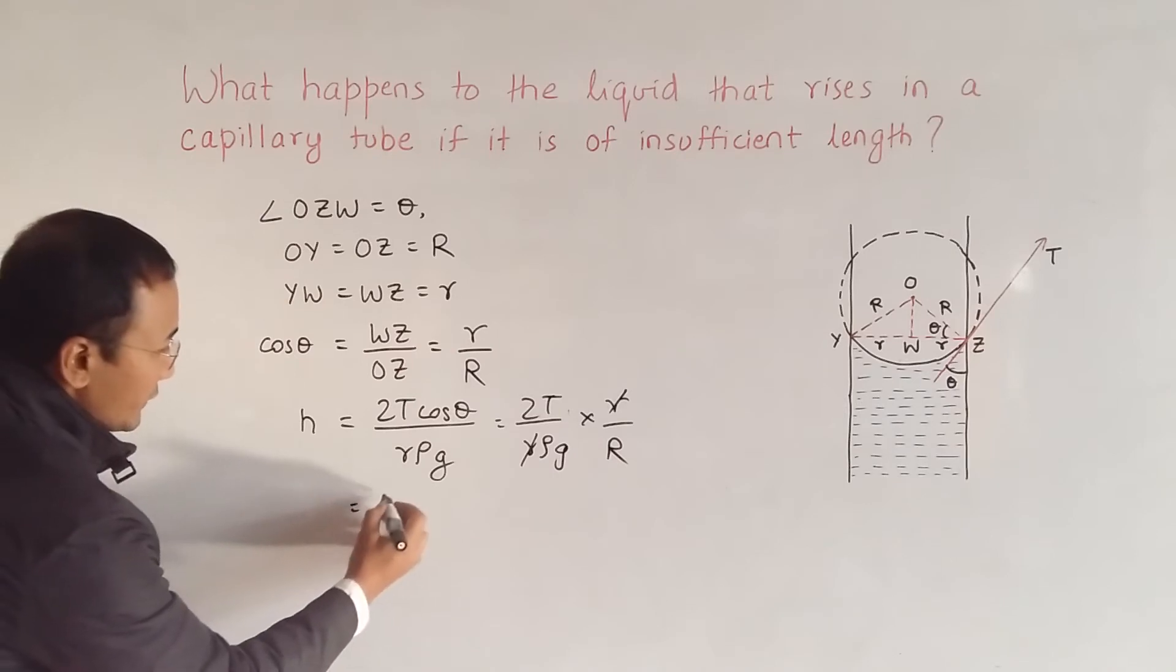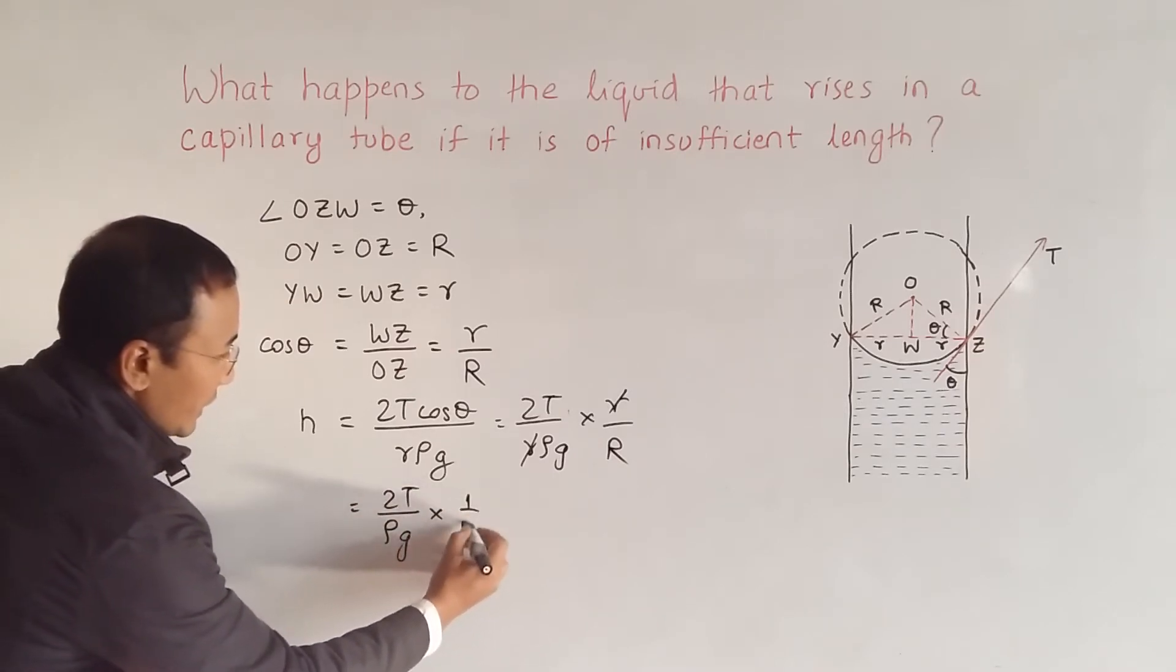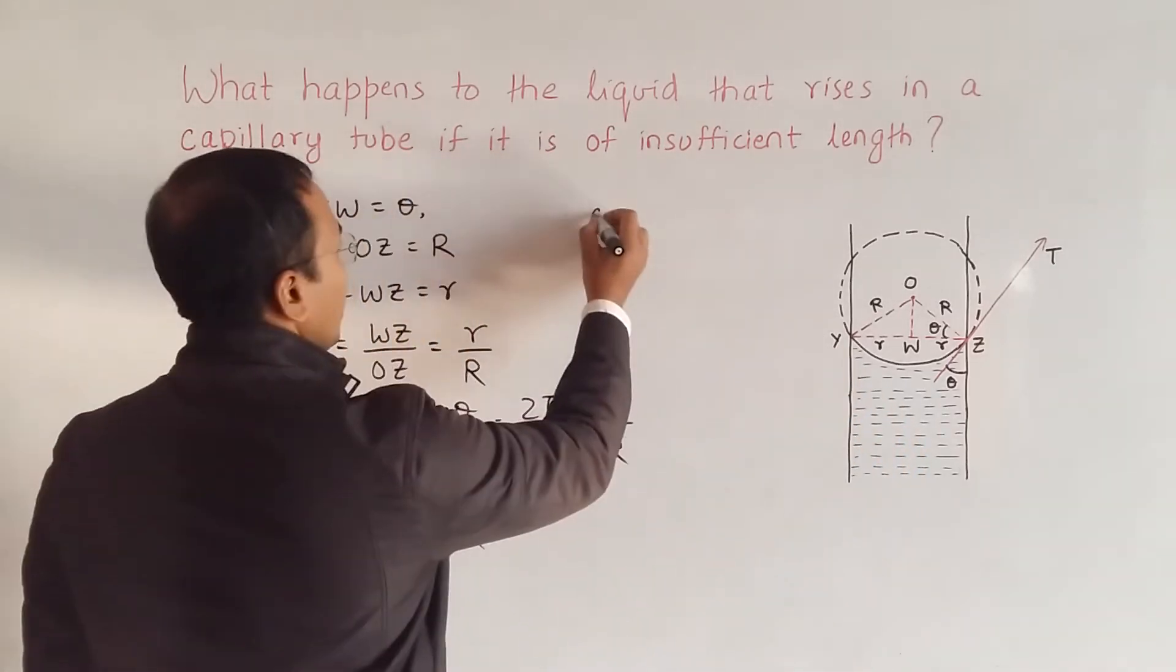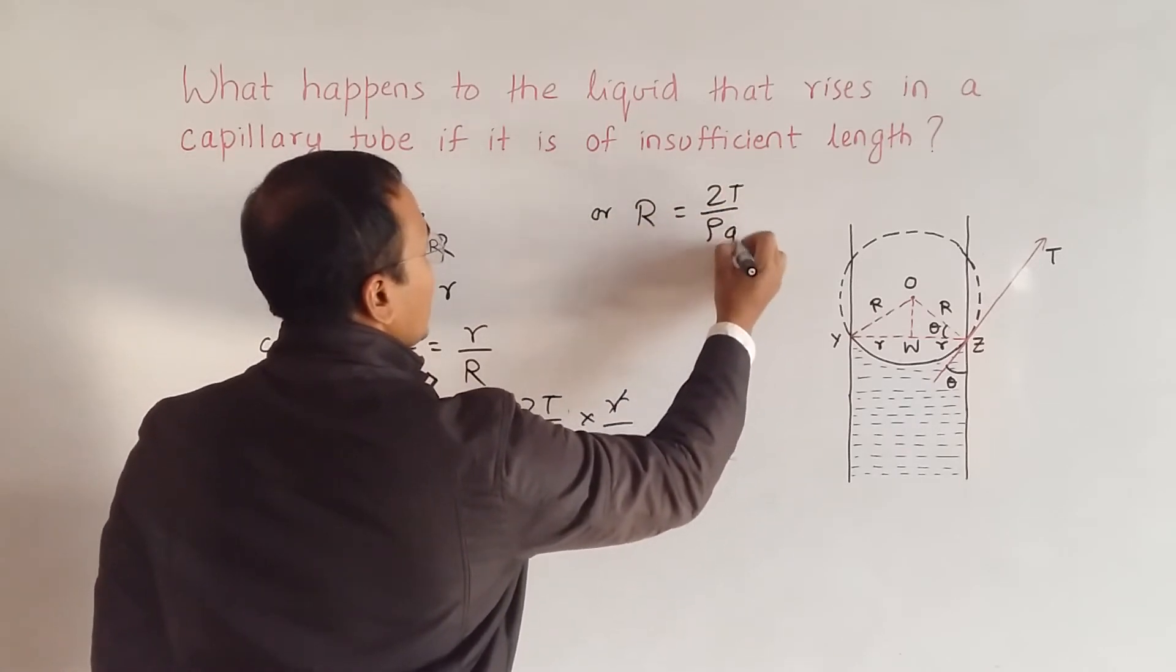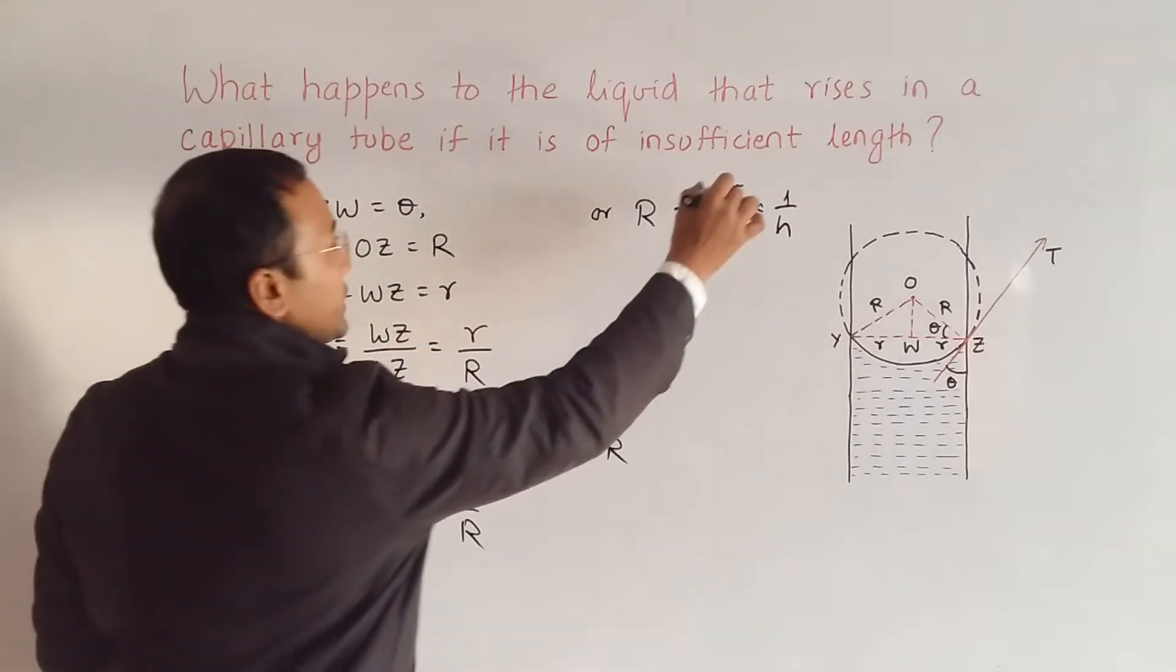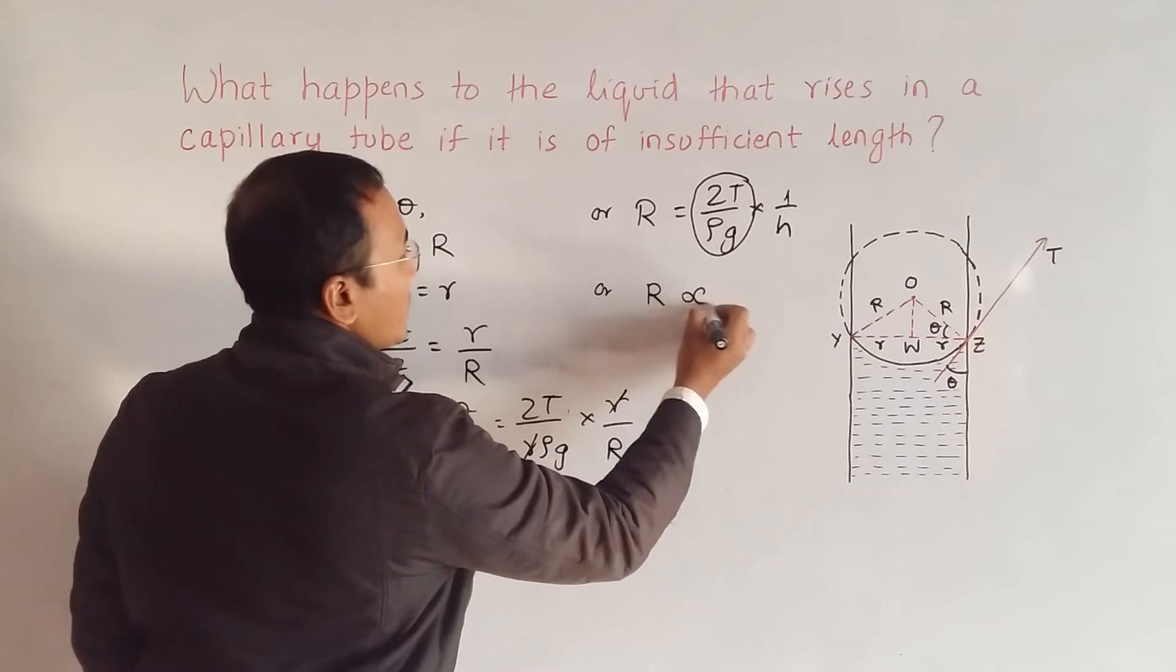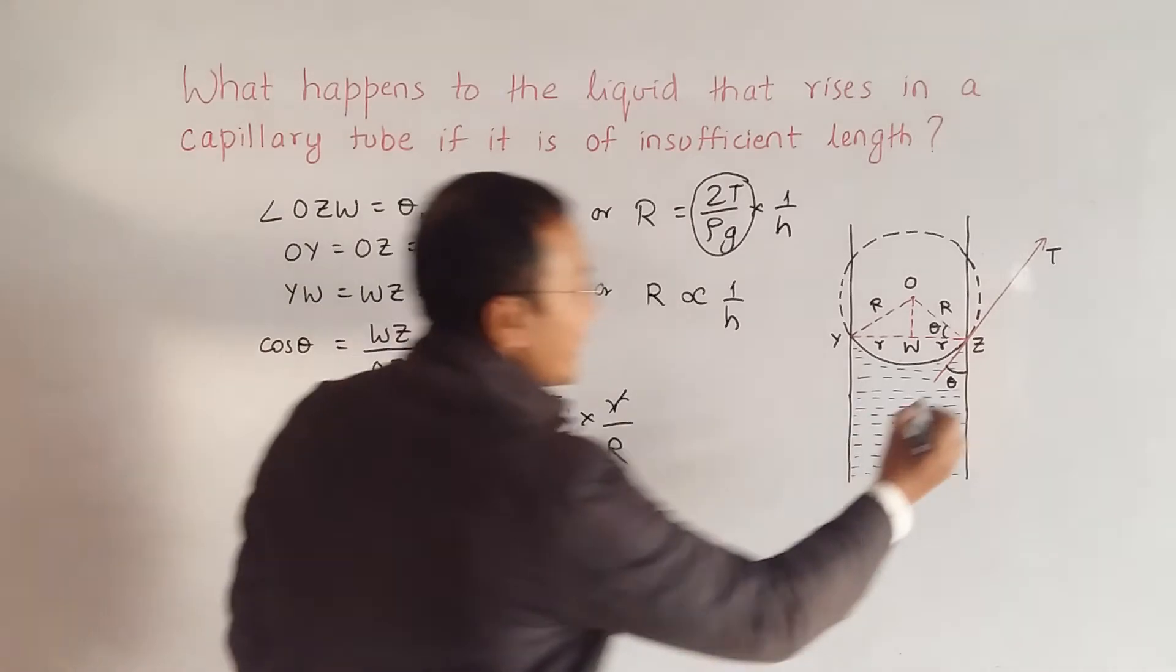Which means that I will have R is equal to 2T by ρg into 1 by h. So since this thing is constant, I can say R is proportional to 1 by h.